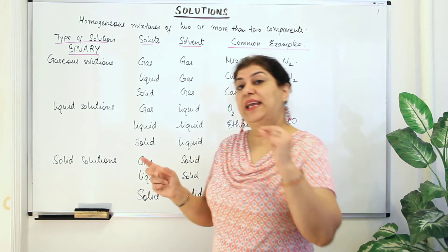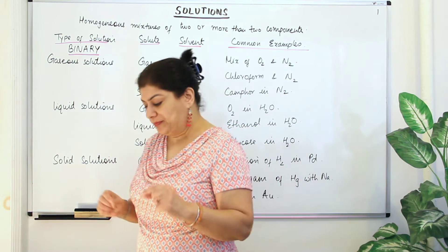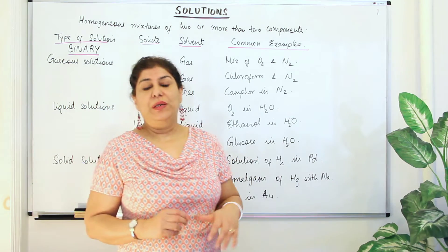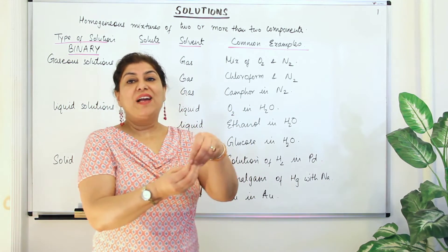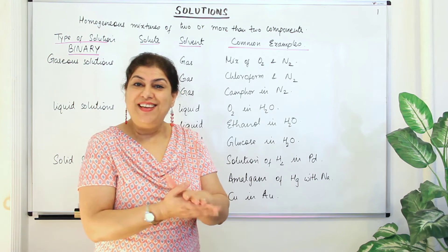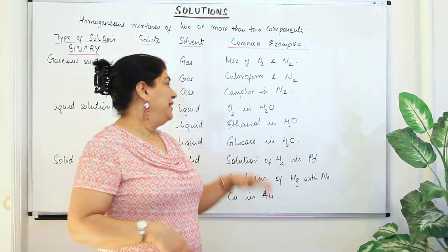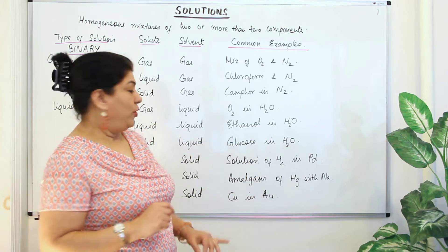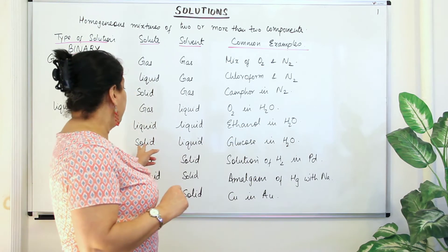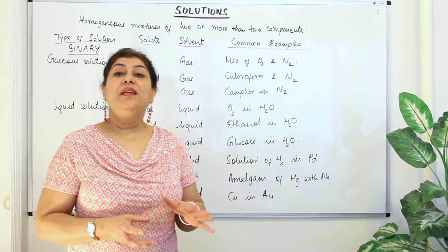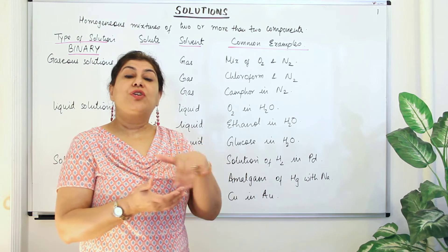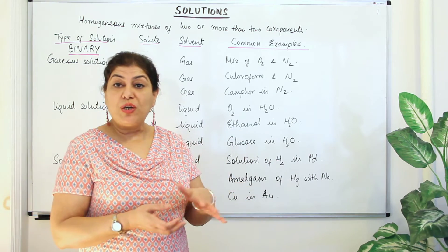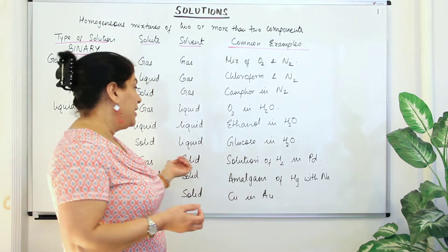The second type of liquid solution is liquid in liquid, where both solvent and solute are liquids. For example, ethanol dissolved in water. The third type is solid in liquid — dissolving salt in water, or sugar in water are classic examples of a solid dissolved in a liquid solvent.